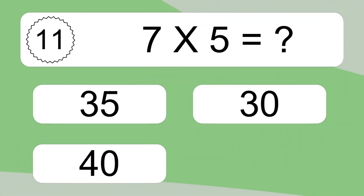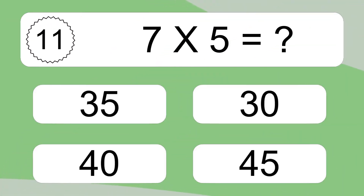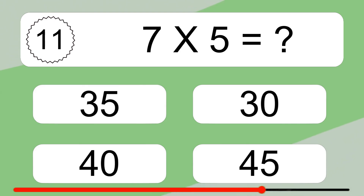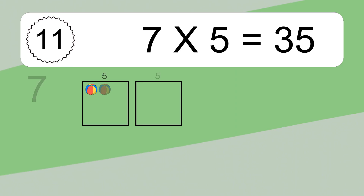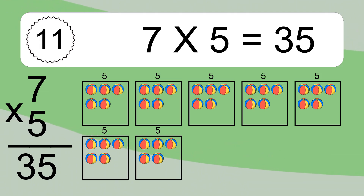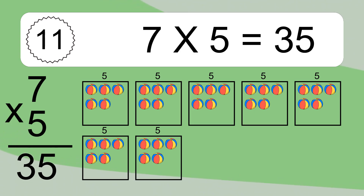Five times five equals what? Five times five equals 35. We have seven boxes and each box has five colorful balls inside. If you count all the balls in all the boxes together, you will have seven times five balls. This equals 35 balls.